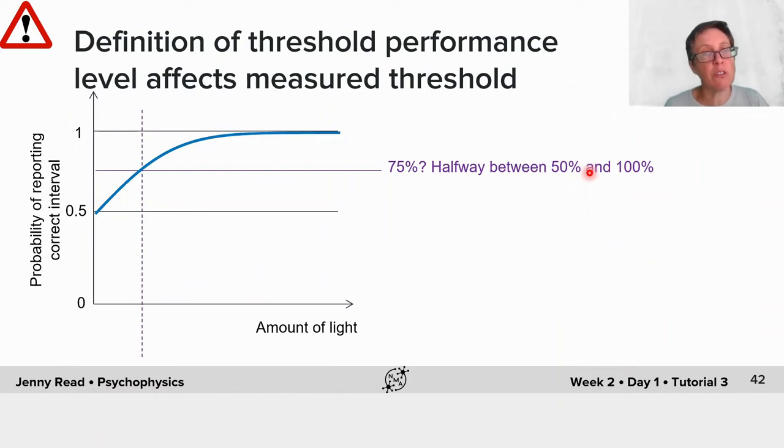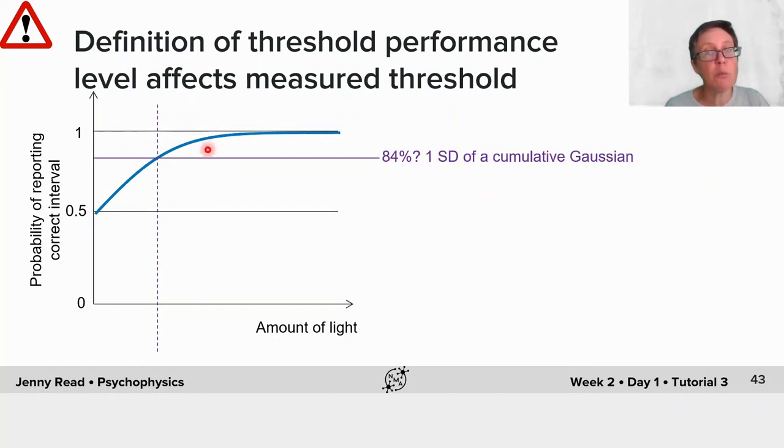One thing to watch out for is that the threshold that you measure depends on what you define as being threshold performance. You might think a logical choice is 75% for this two interval task, so that's halfway between chance and perfect. That's perfectly fine.